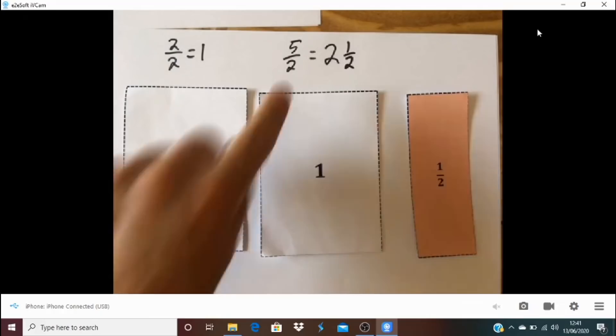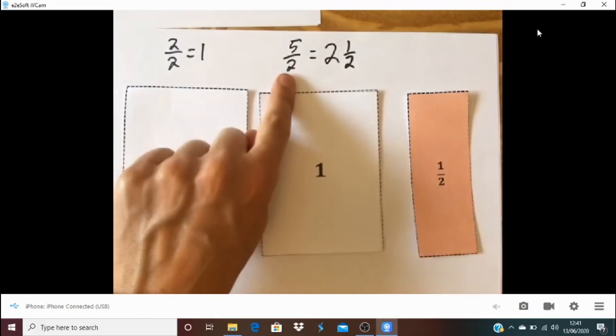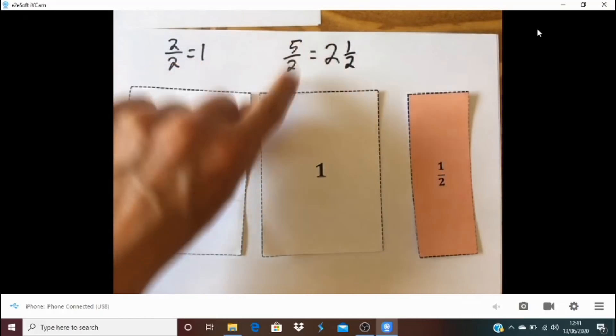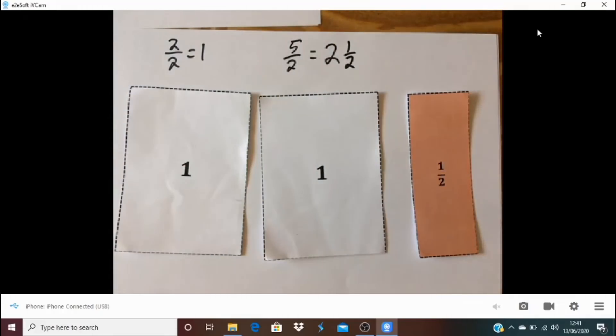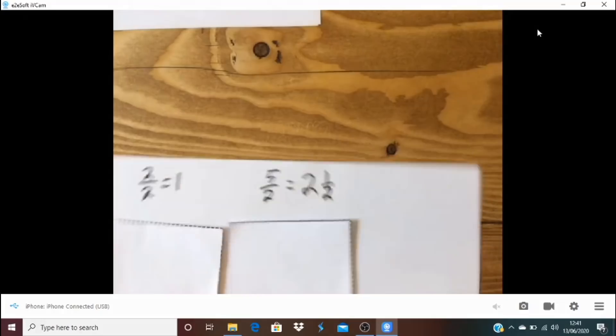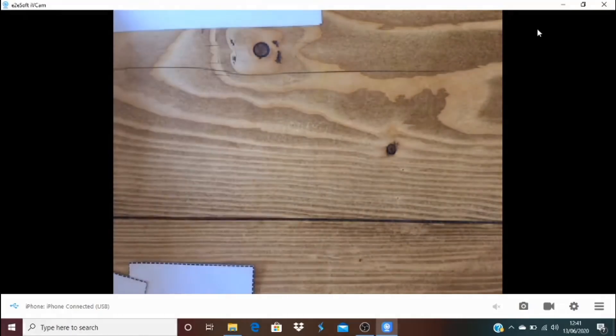Okay. And there we've got improper fractions and mixed numbers. And of course, improper because there, the numerator is more than the denominator. So let's just have a look at a few other examples. So I'm going to put my halves away. I'm going to keep holding my 1s. And we're going to have a look using just a few other fractions.